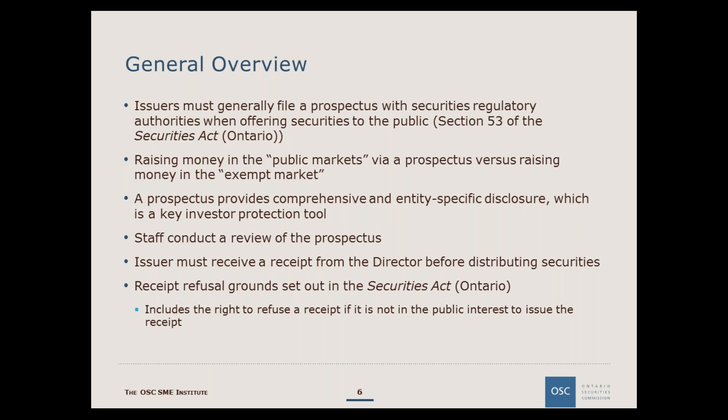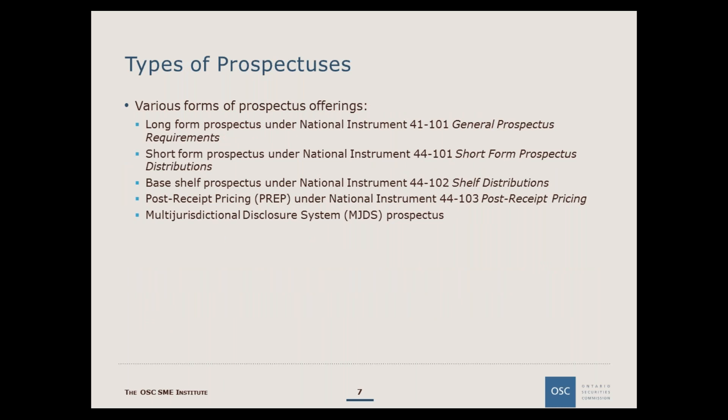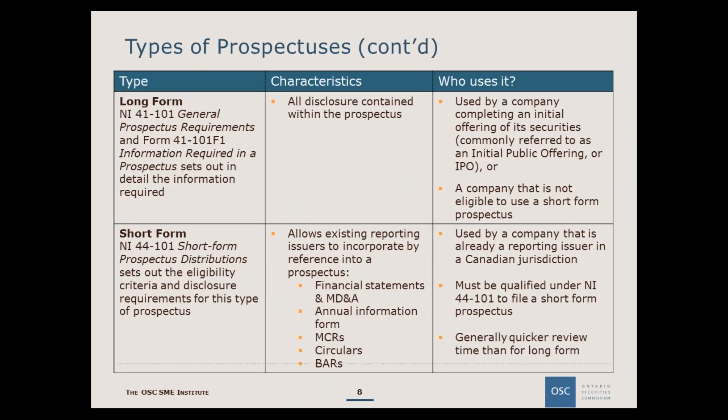For a more detailed overview of raising funds in the exempt market, please see the SME Institute presentation from January 25, 2017, entitled Financing Options for SMEs, available on the OSC's YouTube channel. A long-form prospectus is used by a company completing an initial public offering or IPO, or by a company that is not eligible to use a short-form prospectus. Small and medium-sized enterprises that do not have a current annual information form are generally required to file a long-form prospectus. From the date the preliminary long-form prospectus receives a receipt, the principal regulator has 10 business days to conduct a full review and issue comments.